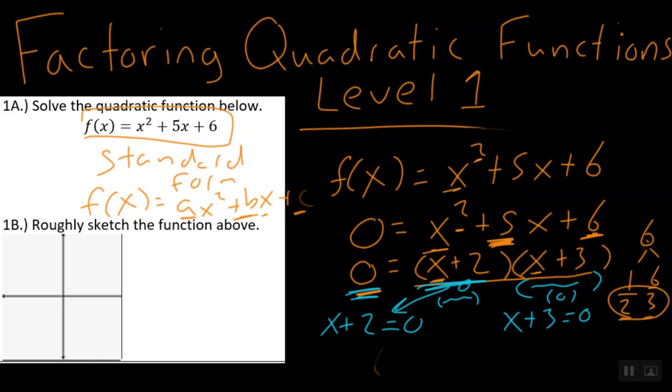So this is the process. I factor it and then I set both factors equal to zero and I solve for x. So x plus 2 equals zero, I go minus 2, minus 2, solving for x, and x is equal to negative 2. Here, I get rid of the plus 3 by minus 3, minus 3, and I get x equals negative 3.